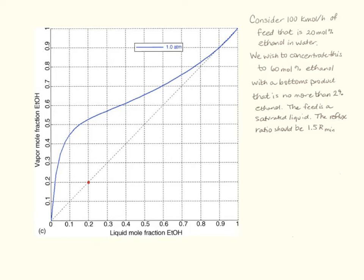And we wish to concentrate this to 60 mole percent ethanol. So 60 mole percent, that means it's going to be our distillate product. So this will be my xd, this is my z. And a bottoms product that's no more than 2% ethanol. So that looks like that's going to be down here.